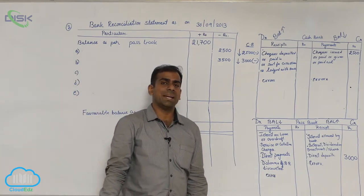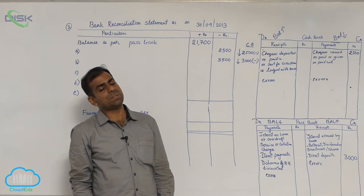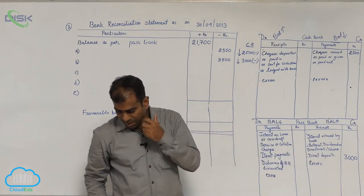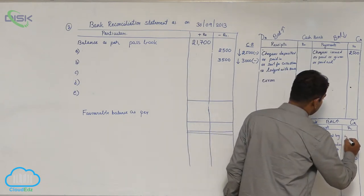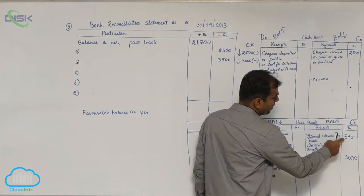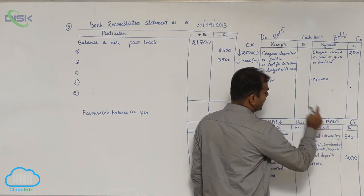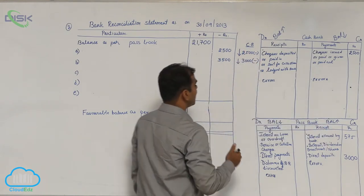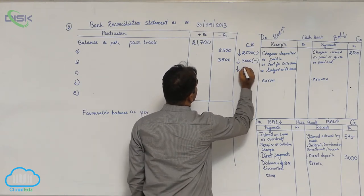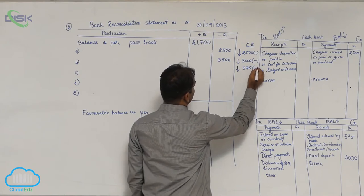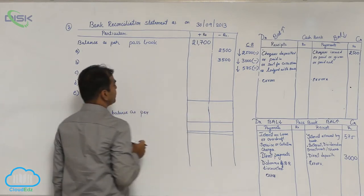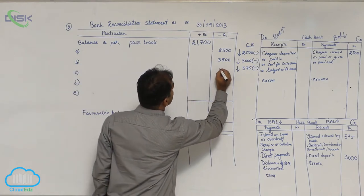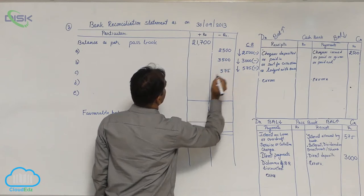Bank is crediting the interest, so the entry will be made by the bank into the pass book. Interest credited means interest is entered on the credit side. Enter this amount of 575 on the credit side of the pass book. When an amount is entered on the credit or receipt side, pass book balance will increase. We are finding out cash book, so give the opposite treatment — cash book balance will decrease by 575. Write: interest credited by bank in pass book — minus 575.